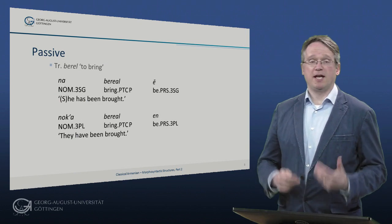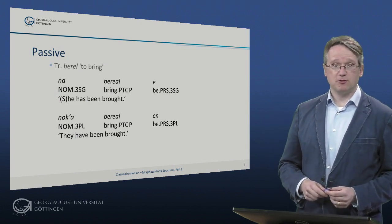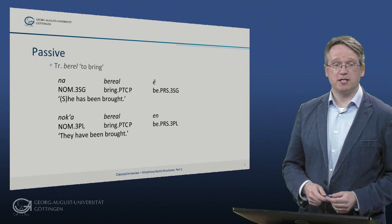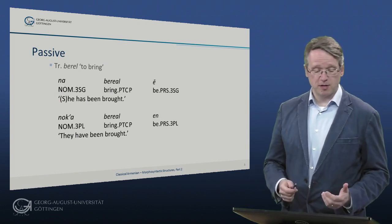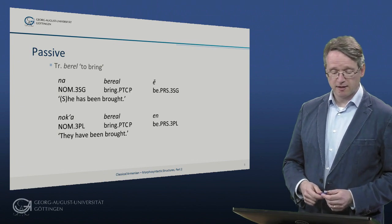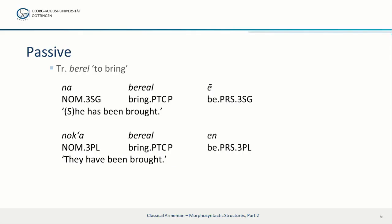The perfect also can have a passive reading, so clauses in which the original object of a transitive verb has been promoted to subject position. So, for example, with berel 'to carry, to bring', we find things like na bereal e, which then has a passive reading, and here again we have the nominative marking na of the pronoun, and the participle bereal, and the copula verb form e — na bereal e, 'he or she has been brought'. And again, if we take the plural, we have nokʿa, they, bereal, again participle, and agreement in the verb in the plural, 'they have been brought'.